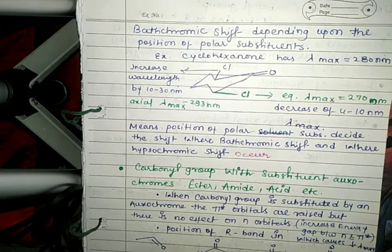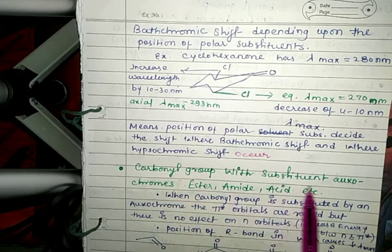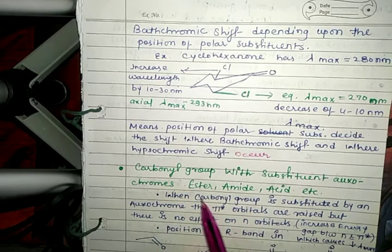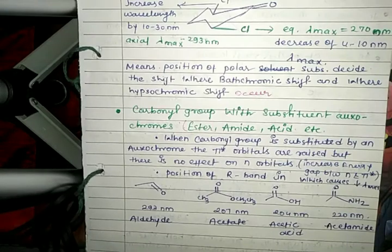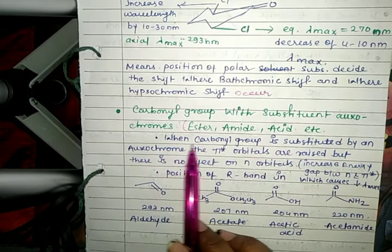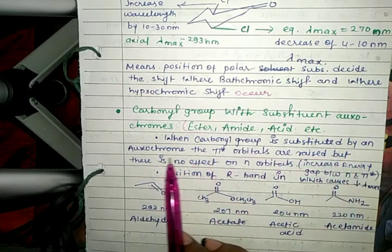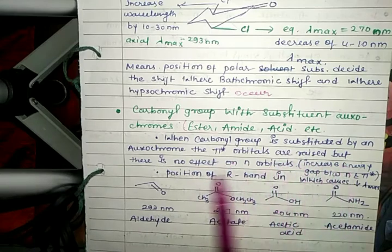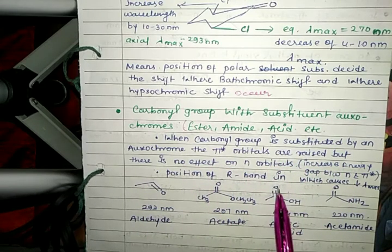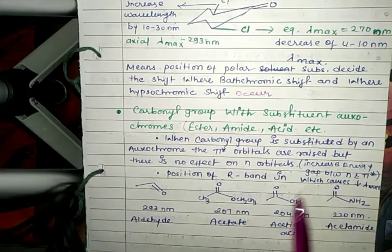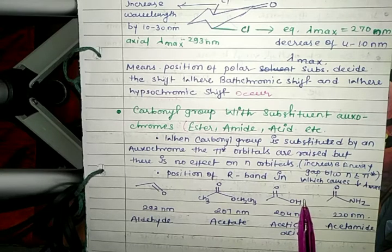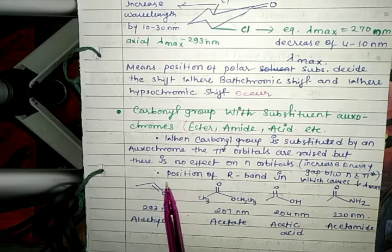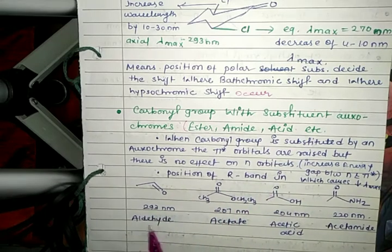Next, we discuss carbonyl groups with substituent auxochromes, such as esters, amides, and acids. When a carbonyl group is substituted by an auxochrome, the pi star orbitals are raised but there is no effect on non-bonding orbitals. This increases the gap between n and pi star orbitals, causing a decrease in lambda max value.